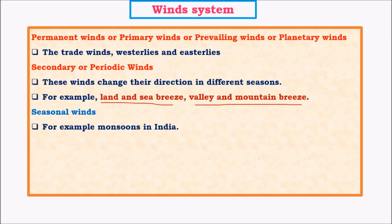In monsoon winds, we see a change in the direction of winds based on seasons, whereas in land and sea breeze and valley and mountain breeze, we see the change in direction of winds based on day and night.